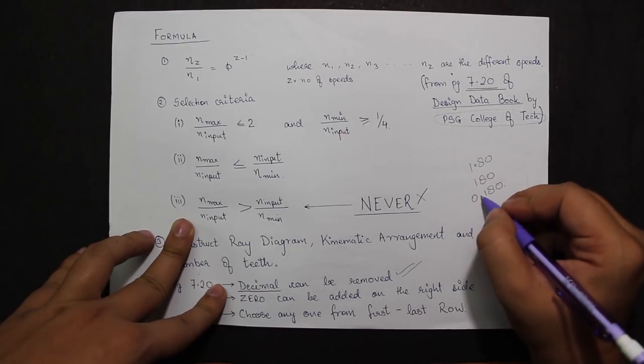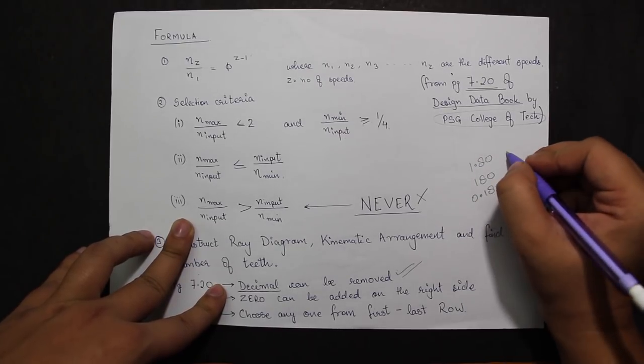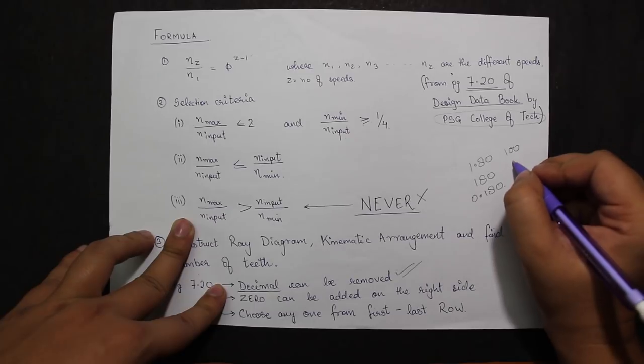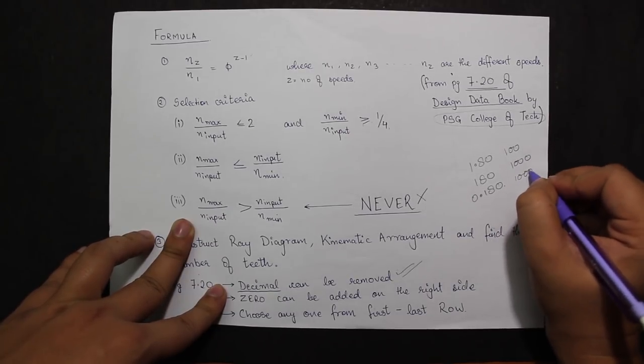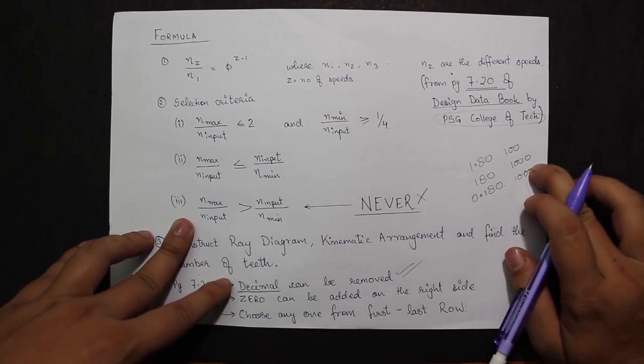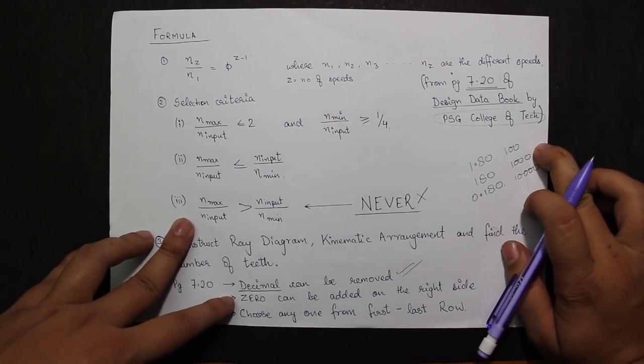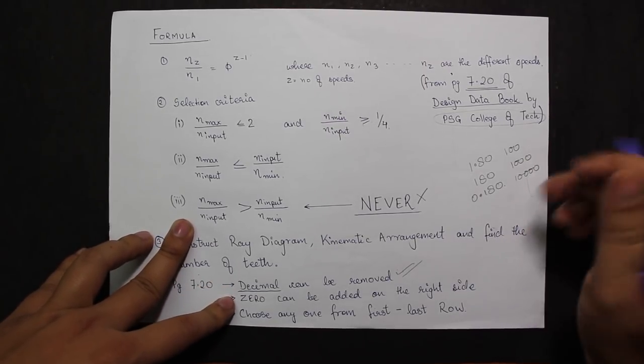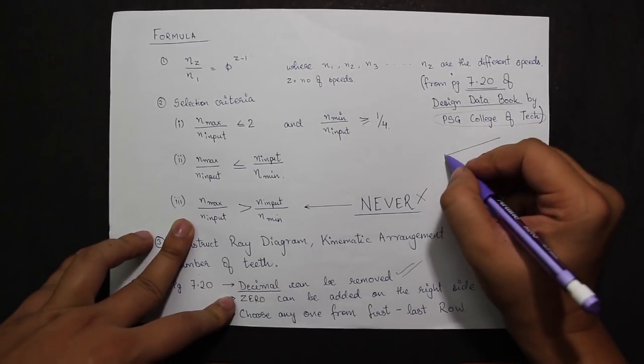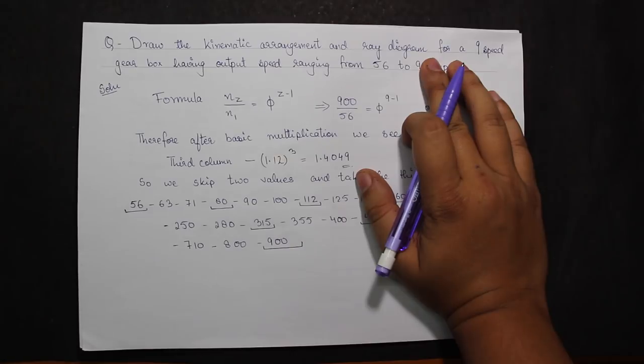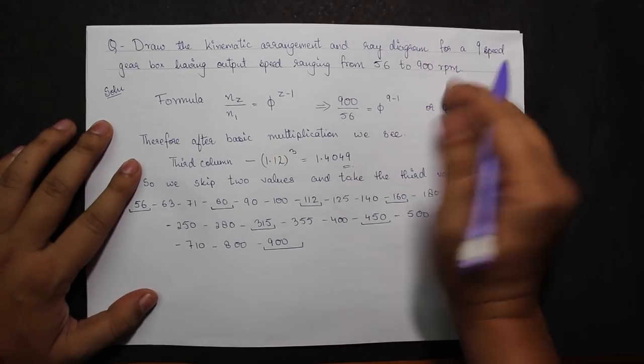Zero can be added on the right side, so the number 100 can be written as 100, 1000, 10000, anything. From point two, we can judge that the first row and the last row are exactly the same thing, so we'll be choosing only one of them each time.